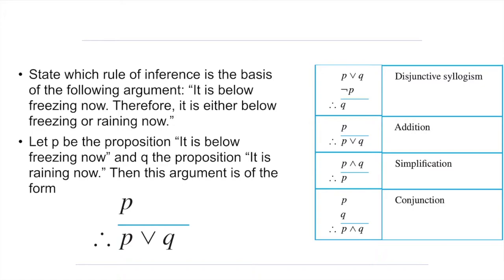The first thing we have to do is to choose propositional variables to represent the form of that argument. So if p is the proposition 'it is below freezing now' and q is the proposition 'it is raining now,' the argument will have the following form. It is below freezing now, which is p — that is the only premise — therefore it is either below freezing or raining now, which is the conclusion.